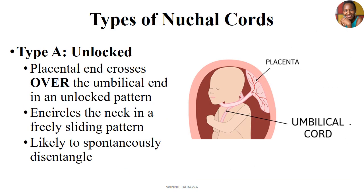So the knuckle cord is a state where the umbilical cord has wrapped itself around the neck of the child in different forms — either loose, tight, once, or twice. We need to appreciate that the umbilical cord has two ends: it has the placenta end and the umbilical end of the child. The cord can come in two types: you can have a knuckle cord that is Type A, known as the unlocked, and then you can have a knuckle cord that is Type B, known as the locked.